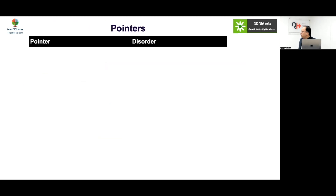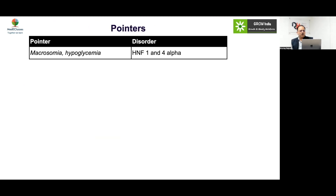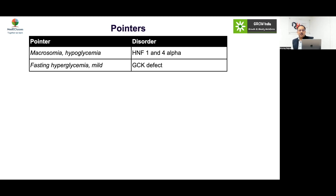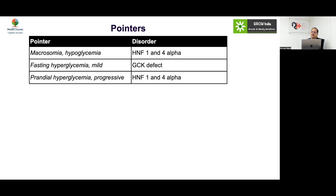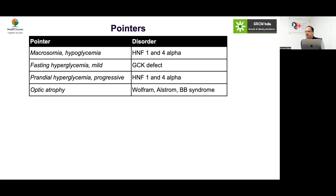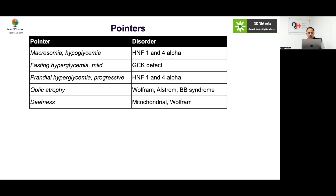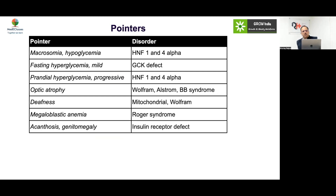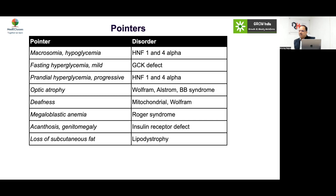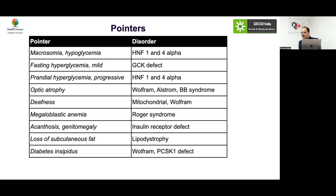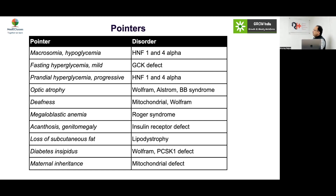For identifying the cause, use clinical parameters. History of macrosomia or hypoglycemia suggests HNF1/4 alpha. Mild fasting hyperglycemia suggests a GCK defect. Perennial progressive disease points to HNF1 and 4 alpha. Optic atrophy suggests Wolfram, Alström, or Bardet-Biedl syndrome. Deafness in the setting of mitochondrial disease or Wolfram syndrome, and megaloblastic anemia, points to Roger syndrome. Genitomegaly and acanthosis suggest an insulin receptor defect. Loss of subcutaneous fat suggests lipodystrophy. Maternal inheritance pattern indicates mitochondrial disorders.